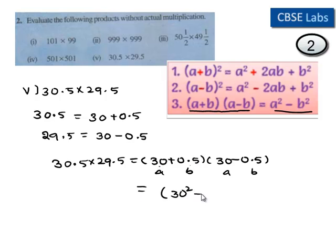30 square minus 0.5 whole square, which is equal to 900 minus 1 upon 4.